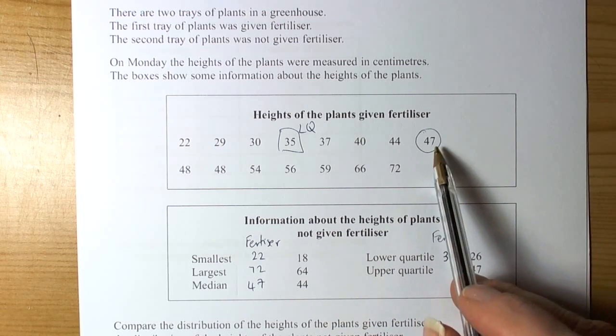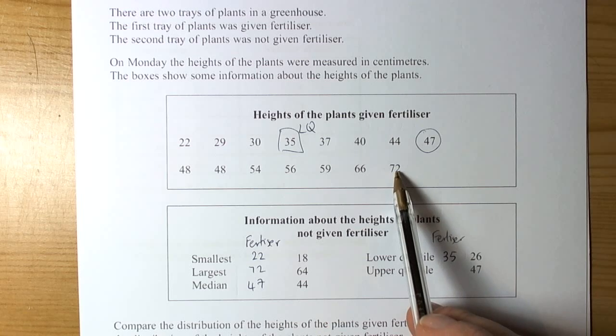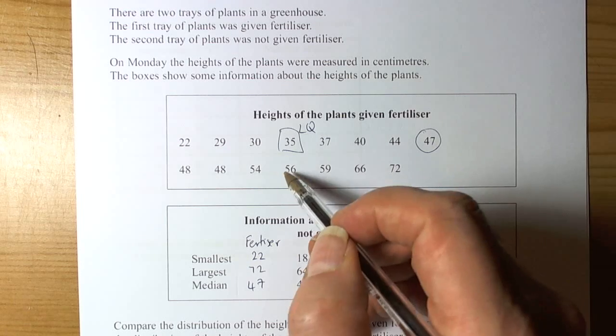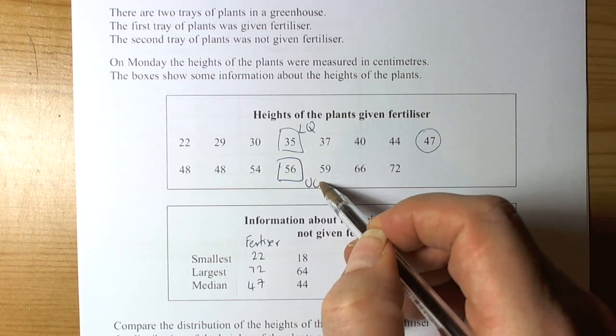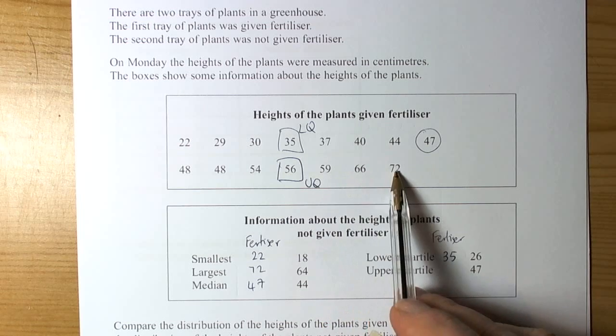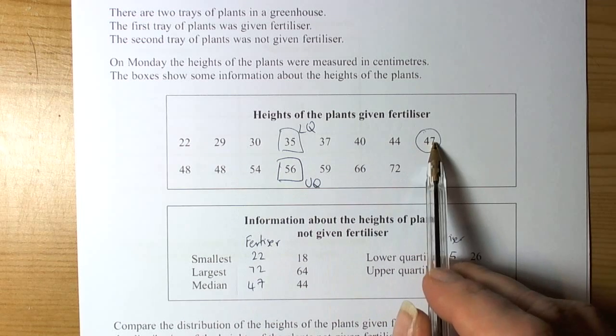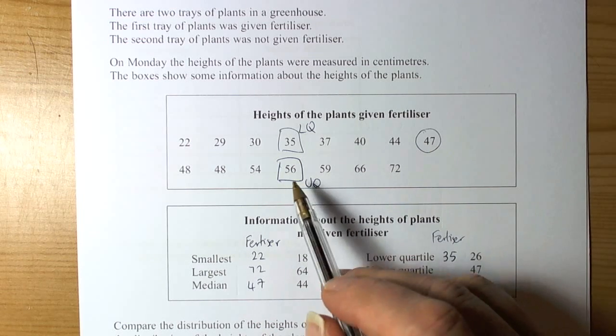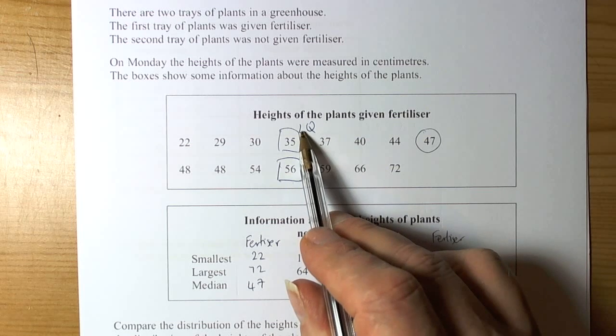And then the upper quartile value - we count 3 the other way, and there's the upper quartile value. It has 3 values above it and 3 values below it down to the median position. So that's three-quarters of the way through the data.